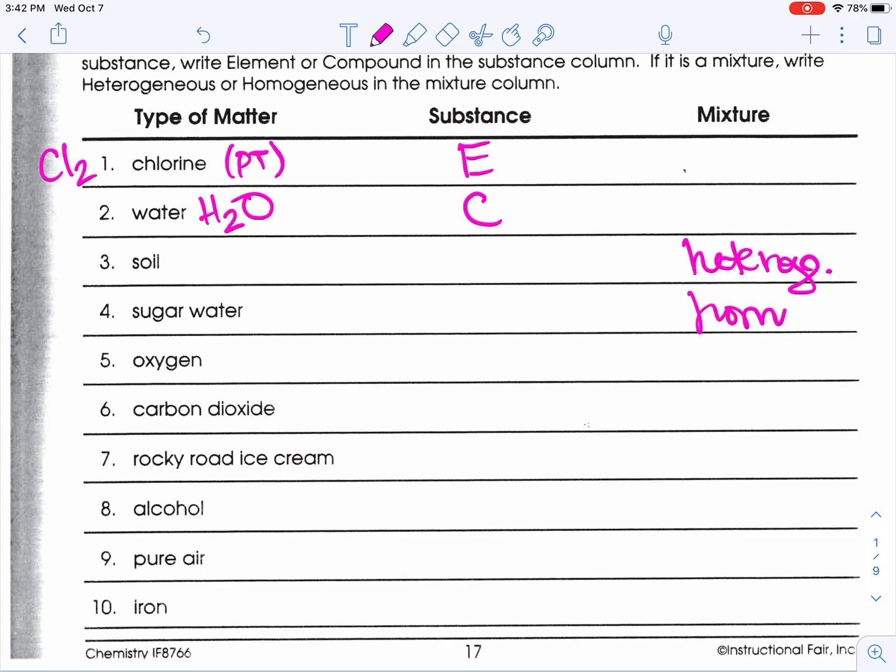Oxygen has a formula, O2 (or if you didn't know it's O2, just O at this point), which means it is a substance—a pure element. Carbon dioxide has a formula, which means it is a pure substance. It is a compound because there's more than one element.